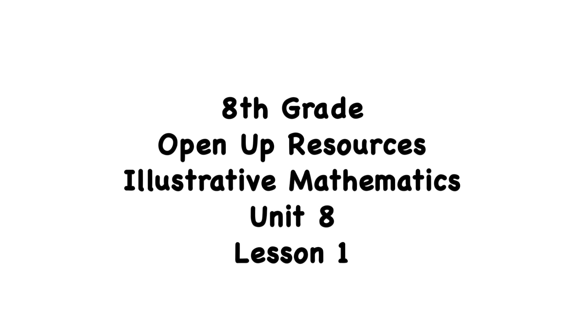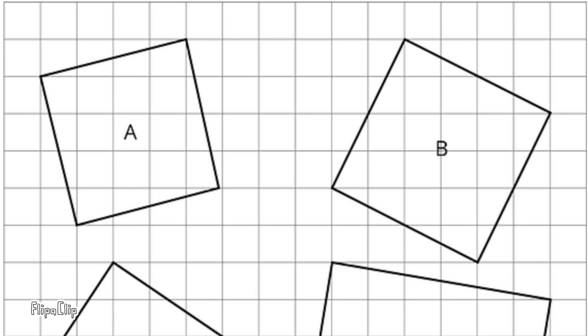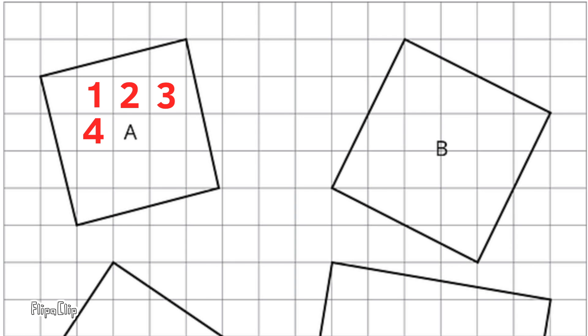Eighth Grade Open Up Resources, Illustrative Mathematics, Unit 8, Lesson 1: The Areas of Squares and Their Side Lengths. Number 1: Find the area of each square. Each grid square represents one square unit.